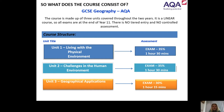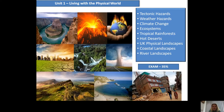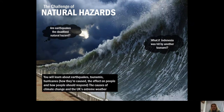There are three exams in Geography, all of which are examined at the end of Year 11. The first of these is Living with the Physical Environment. This is worth 35% of your overall GCSE and is examined with an hour and a half's exam paper. It includes topics such as tectonic hazards, weather hazards, and climate change.